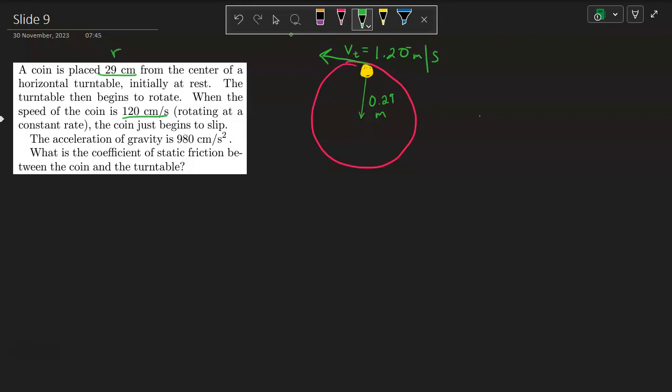This coin is just going to begin to slip. The acceleration of gravity is 980 centimeters per second squared. I already converted, so we're going to use g is 9.8. I went ahead and converted everything to meters per second squared.